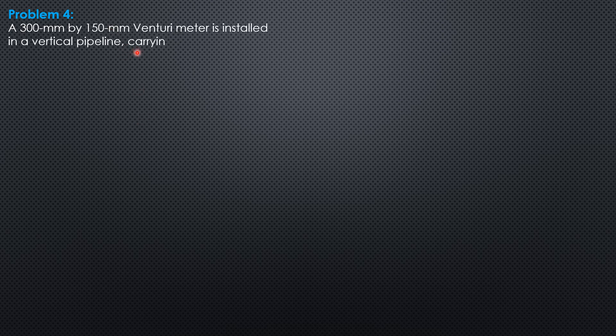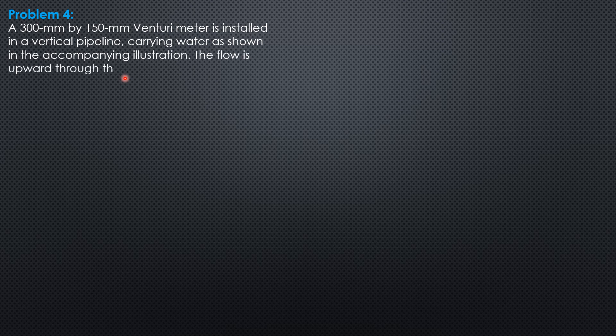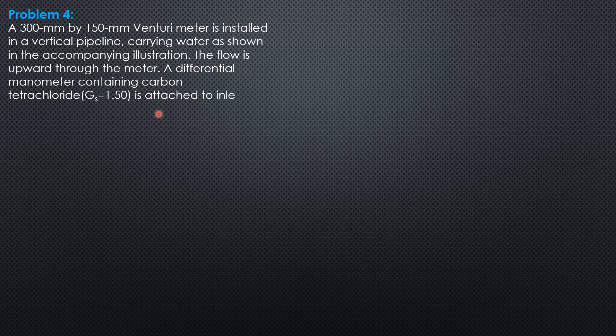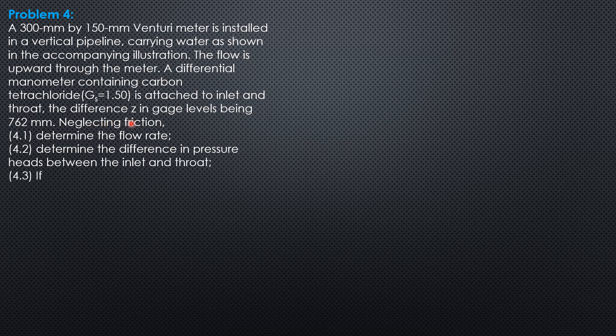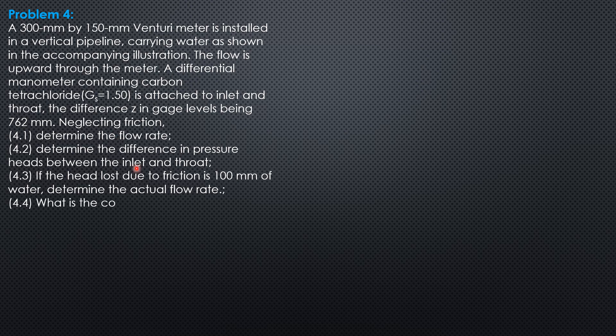Hi everyone, this is example four on flow meters. A 300 mm by 150 mm Venturi meter is installed in a vertical pipeline carrying water as shown in the accompanying illustration. The flow is upward through the meter. A differential manometer containing carbon tetrachloride of specific gravity 1.5 is attached to inlet and throat. The difference z in gauge levels being 762 mm. Neglecting friction.